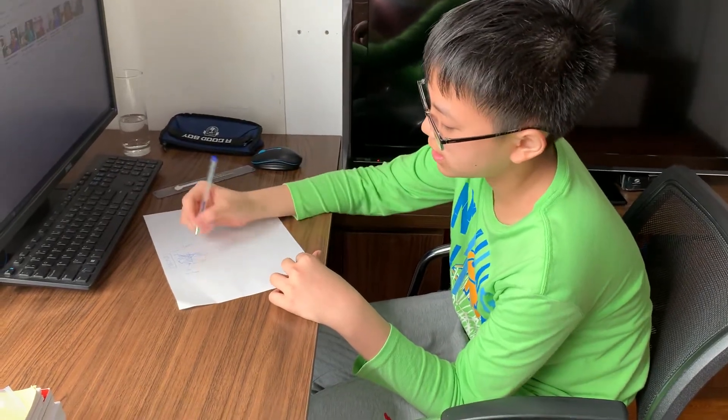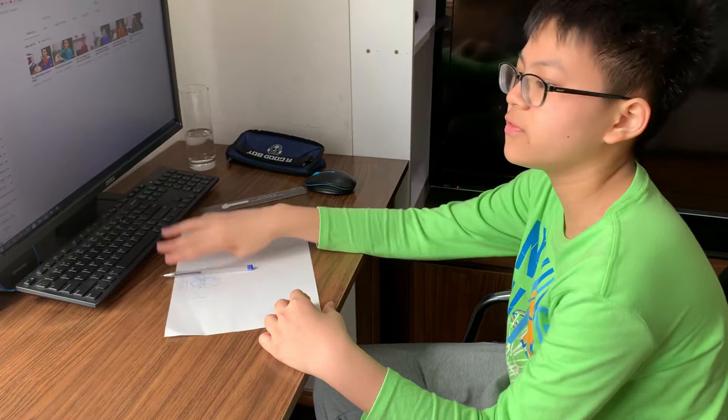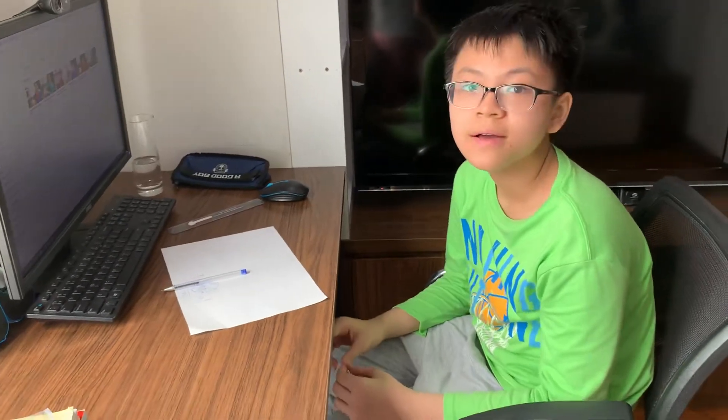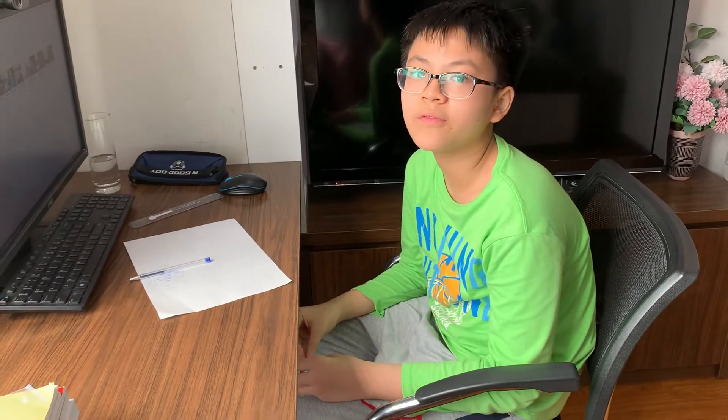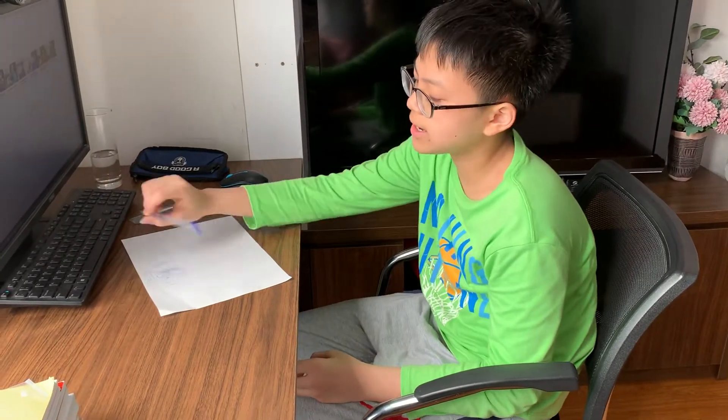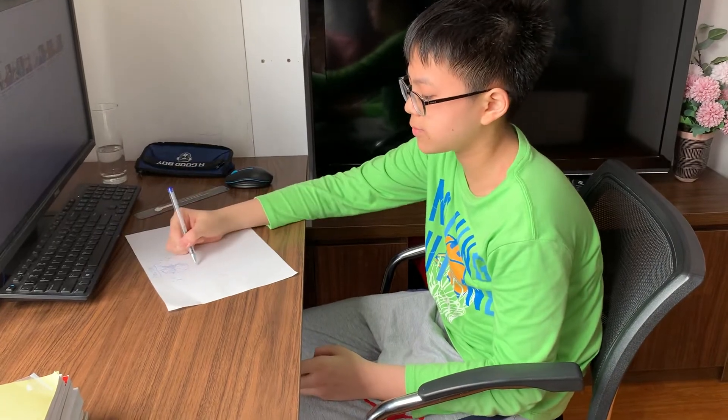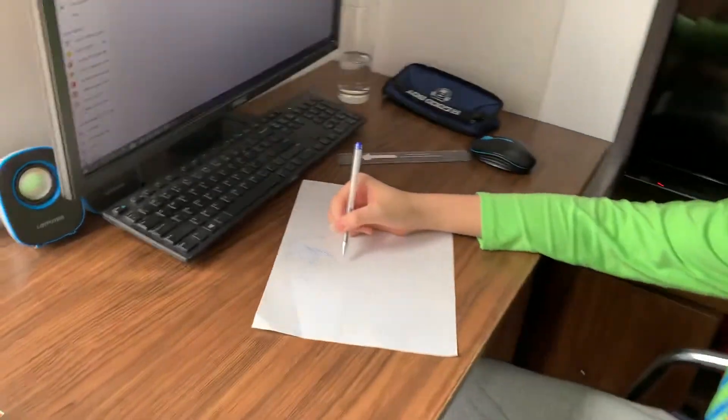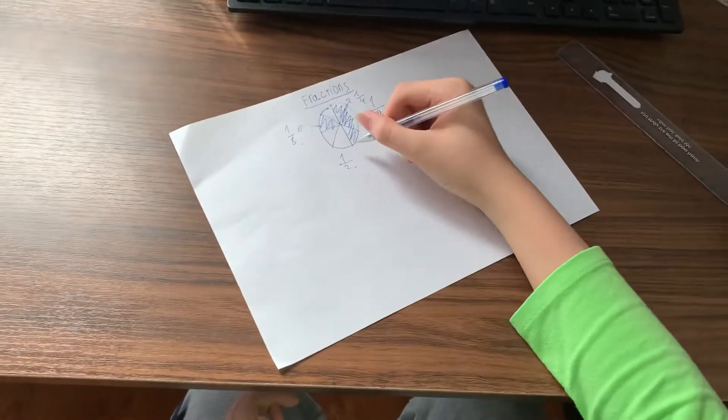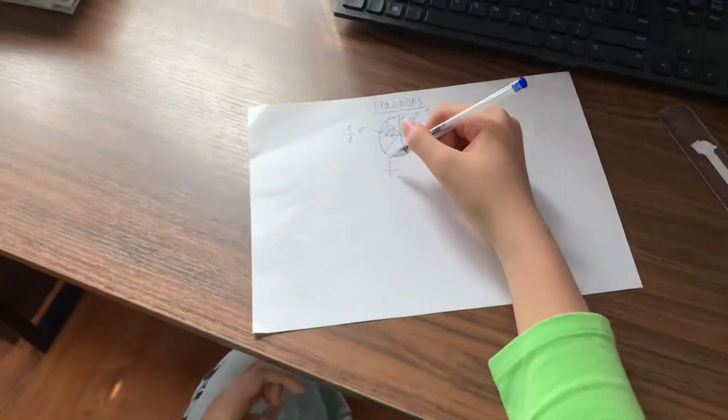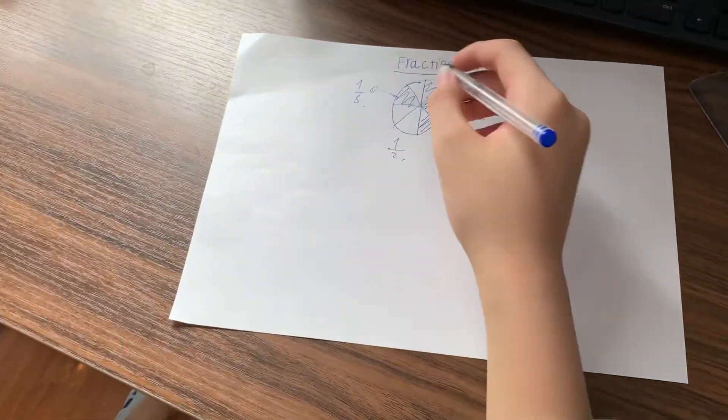So first, what is simplifying fractions? Simplifying fractions is making the fraction look simpler but not changing the value of the fractions. So here you have one half. This fraction cannot be simplified anymore. So we call it unsimplified fractions.